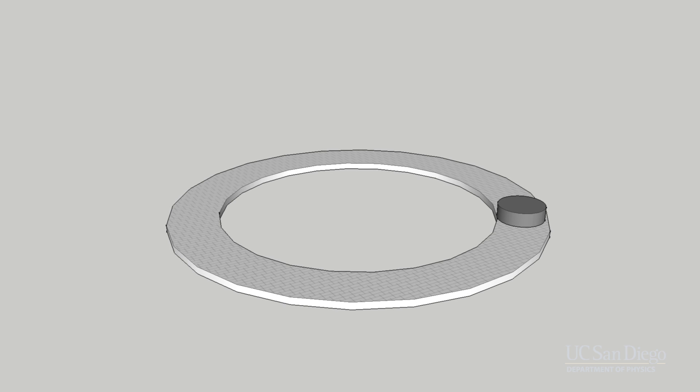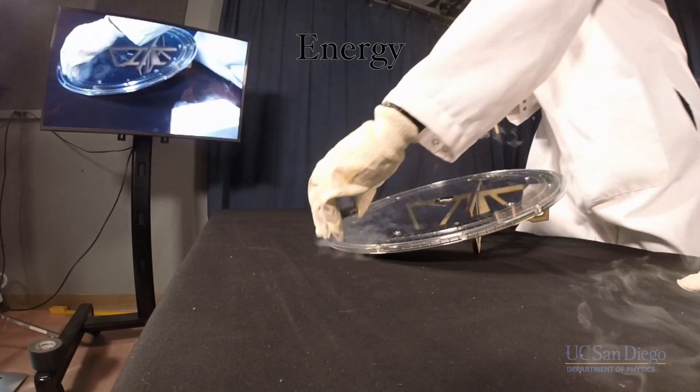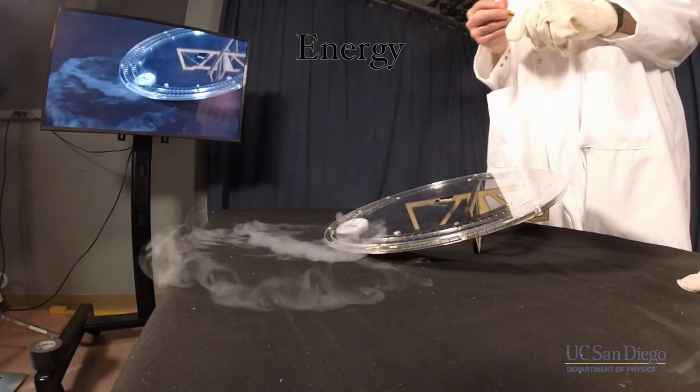Now let's consider the motion of the superconductor from the point of view of energy. Let's define our system to be that of the superconductor, the magnetic track, and the earth. Once set in motion, let's consider the energy of the system.